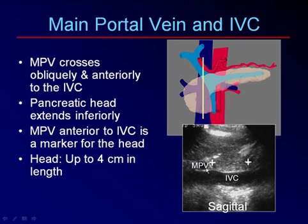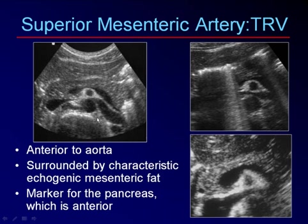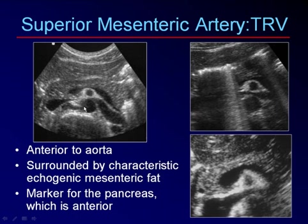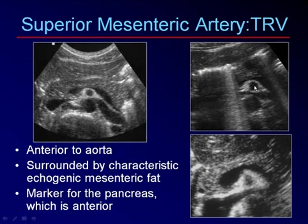This is our marker for the cranial aspect of the pancreatic head. On a transverse scan, the superior mesenteric artery is cut in cross-section as a circle located anterior to the aorta. The superior mesenteric vein has a very characteristic echogenic triangle of mesenteric fat around it that makes it easy to recognize. If you spot that echogenic triangle with a hole in the middle, you know you are at the superior mesenteric artery.